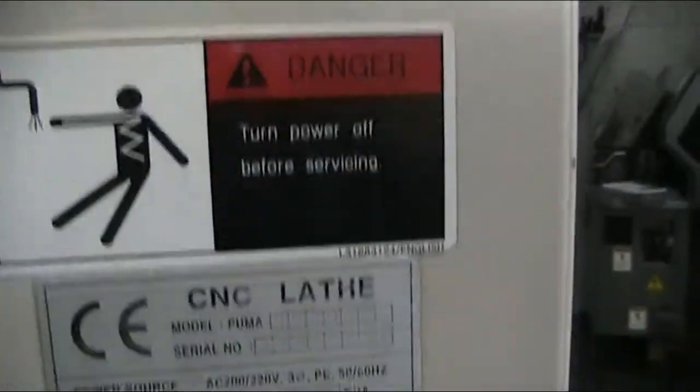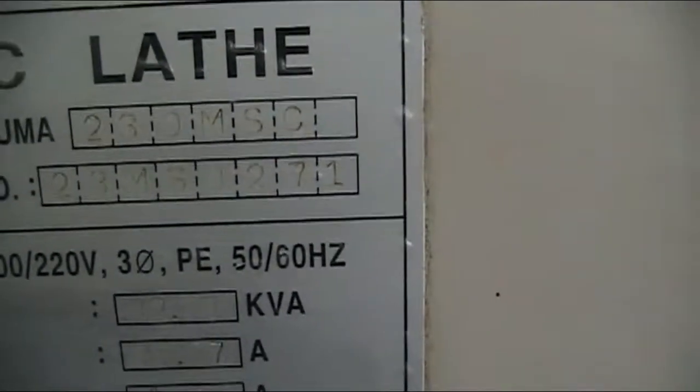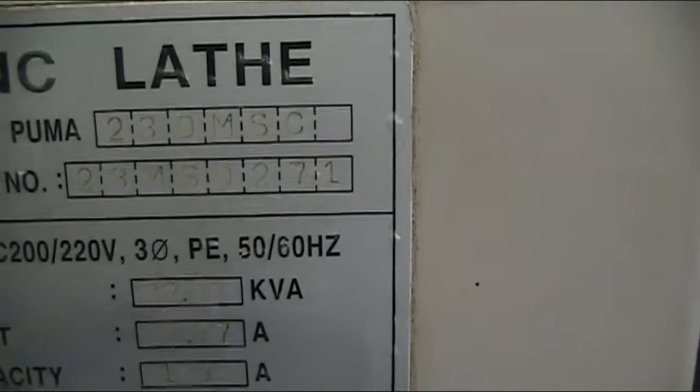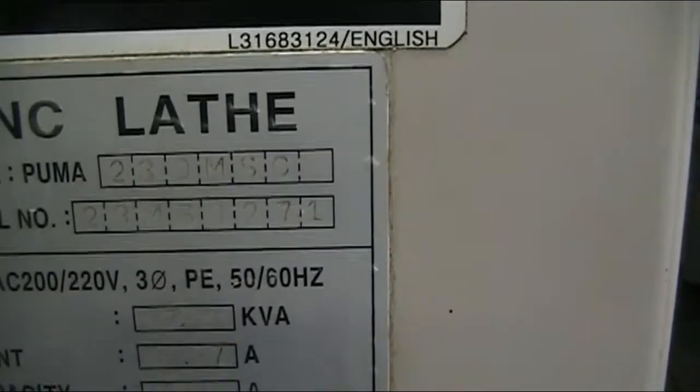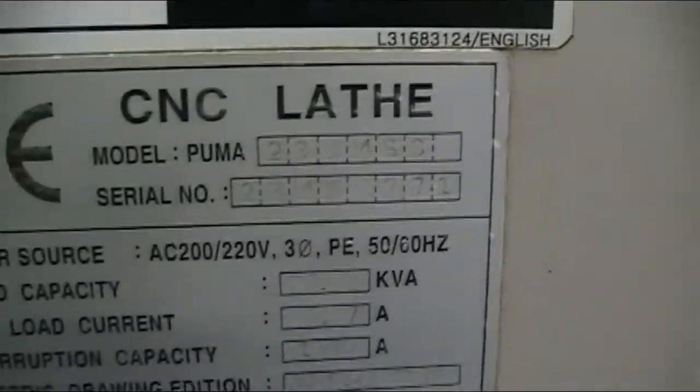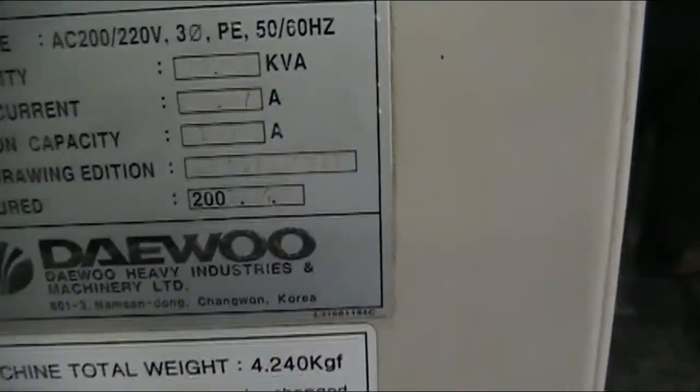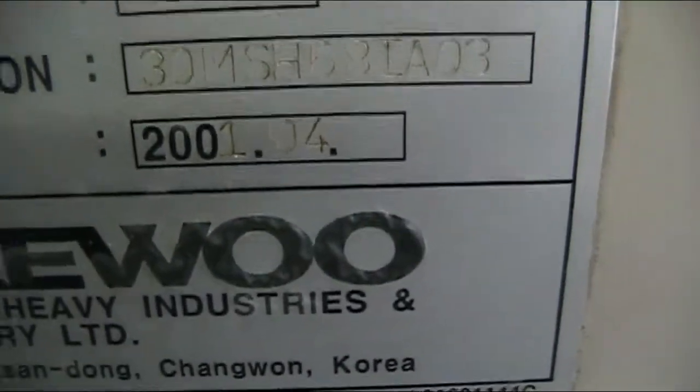Go ahead and get the serial number on the back. This is set at 208 volts. Serial number 34MS0271, Puma 230 MSC, and the manufacturing date 2001.